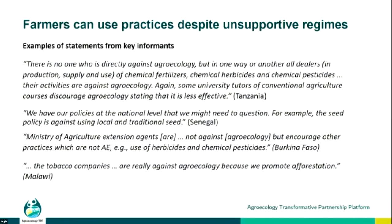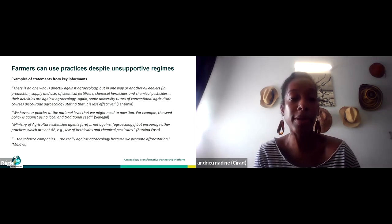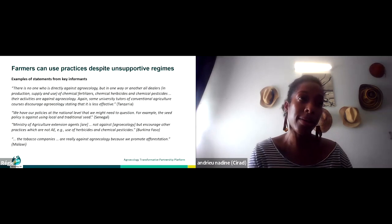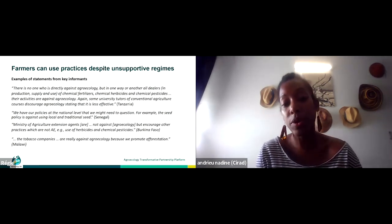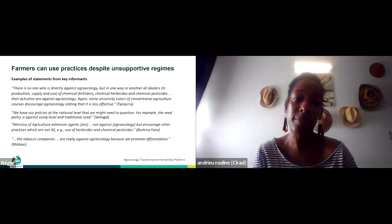An important finding is that farmers are using agroecological practices despite unsupportive regimes. Key informant statements highlight the unsupportive role of the private sector, public policies, and in some cases even scientists who were promoting alternative modes of production. However, in some cases we can see emerging positive public policies — for example in Senegal and Burkina Faso — now trying to support not only synthetic fertilizers but also compost and other sources of organic manure at the farm scale.